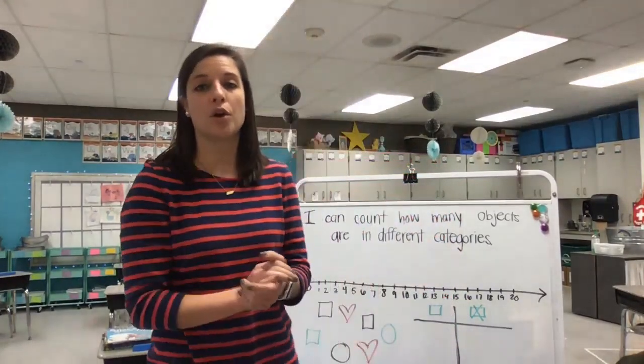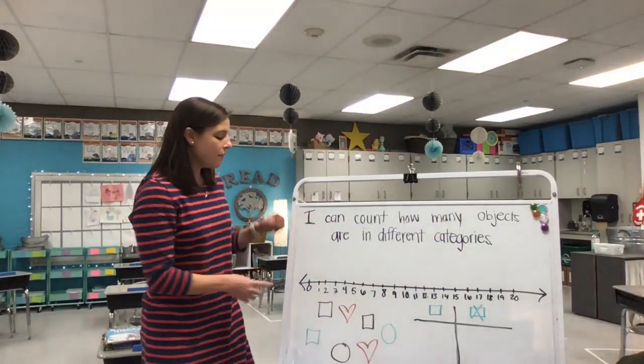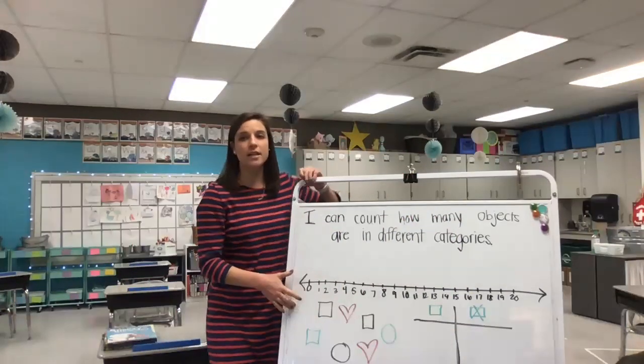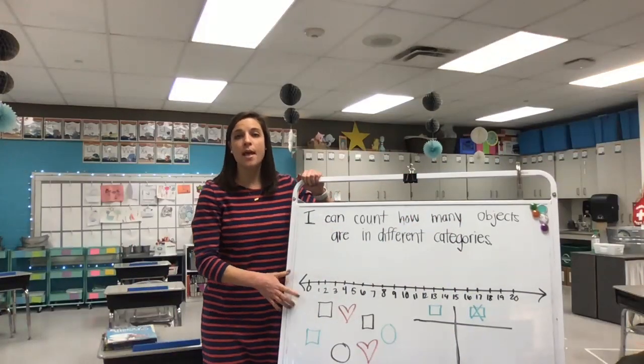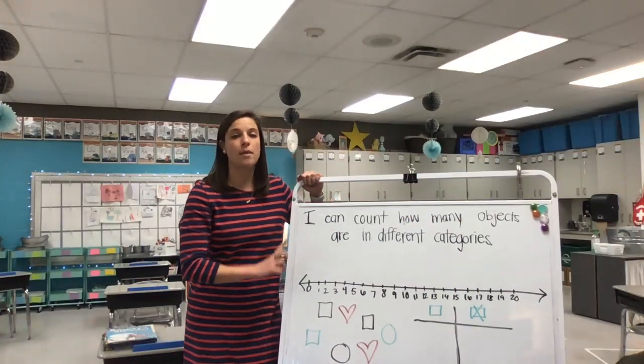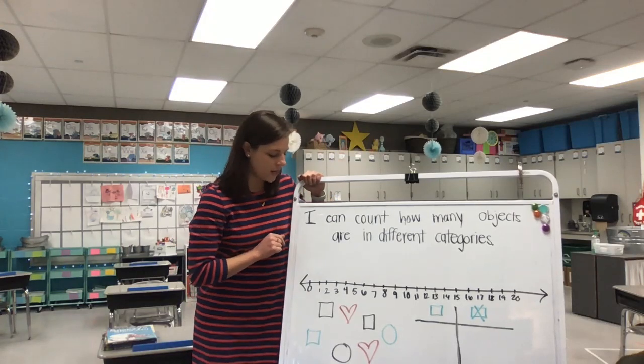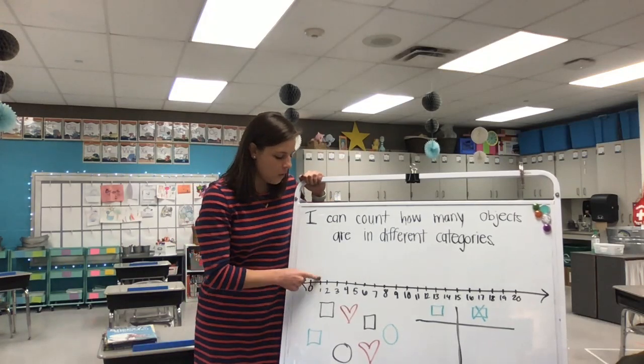Now let's take a look at our number line and use it to help us practice counting in order or in sequence. I have our number line starting at zero again, but we're going to count starting at one, the number that comes after zero. Ready? Here we go.